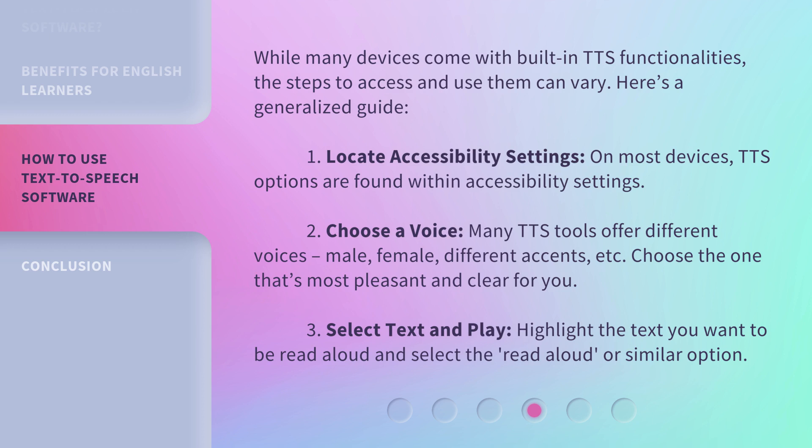Step two: choose a voice. Many TTS tools offer different voices — male, female, different accents, etc. Choose the one that's most pleasant and clear for you. Step three: select text and play. Highlight the text you want to be read aloud and select the 'read aloud' or similar option.